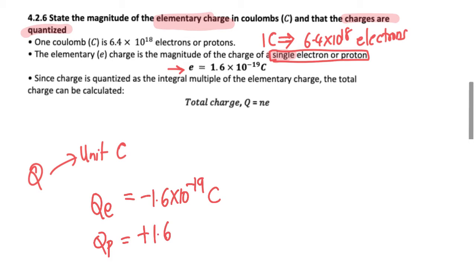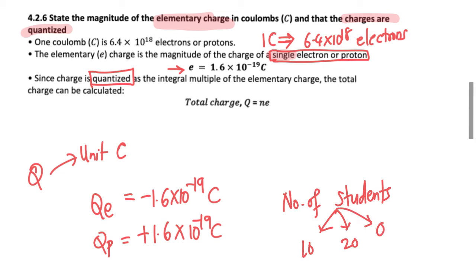Now let's see what the meaning of charges being quantized is. For example, if I ask you how many students are there in the class, the answer would be 10 students, 20 students, or 0 students—a complete number, a whole number. We don't say 10.5 students or 12.5 students. There is no fraction.